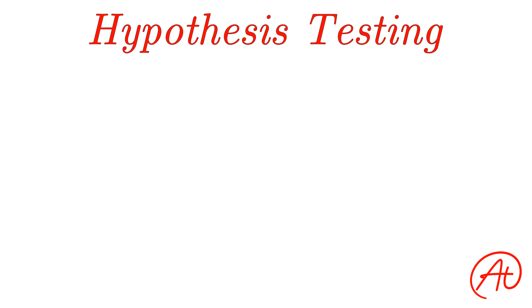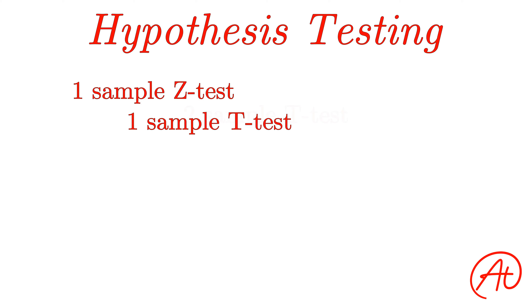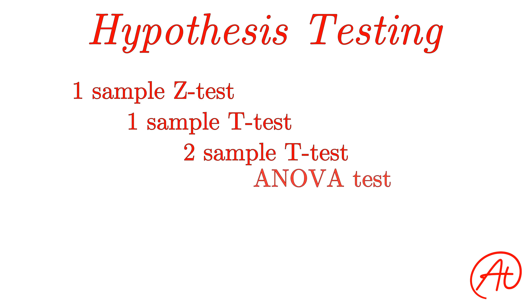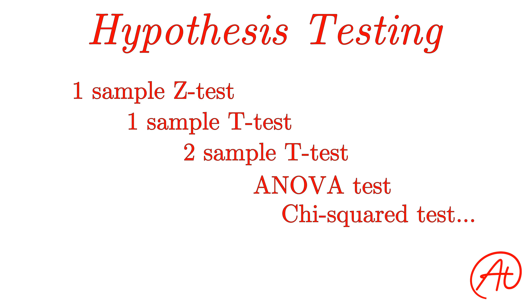So that's the overall idea of hypothesis testing. However, there are a ton of different types of hypothesis tests depending on what you're trying to figure out. To name a few that you may have heard of, there are 1-sample z tests, 1-sample t tests, 2-sample t tests, ANOVA tests, chi-squared tests, and so many more. I'll dive into each of these in future videos, but for now I want to go over the general process that you can follow to do any of these types.